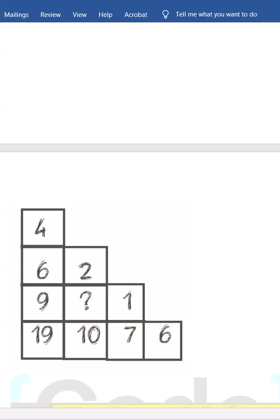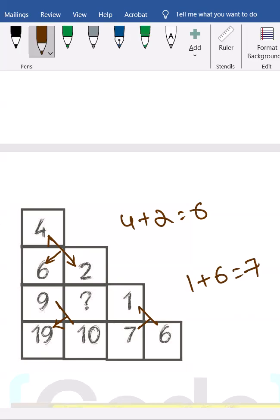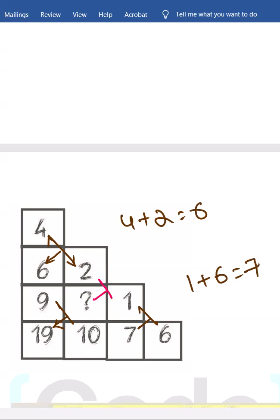So there are different logics for this question, but what I thought of is like 4 plus 2 is giving the result as 6. 4 plus 2 is nothing but equal to 6. Here 1 plus 6 is given as 7. 9 plus 10 is nothing but equal to 19. Now similarly if you try, this must be 2 plus 1 should give the question mark. 2 plus 1 is nothing but 3. So hope you got the answer as 3.